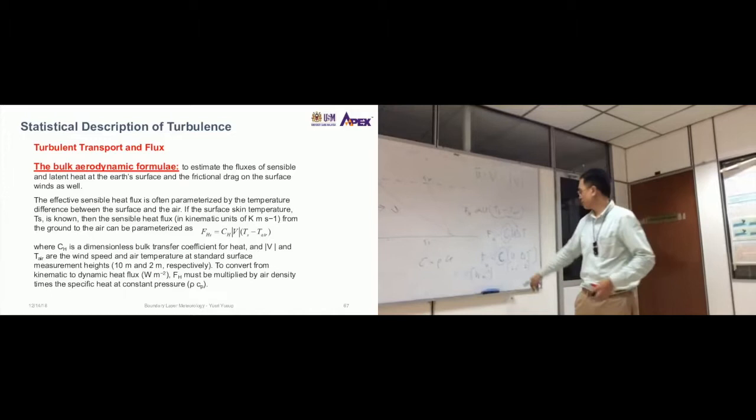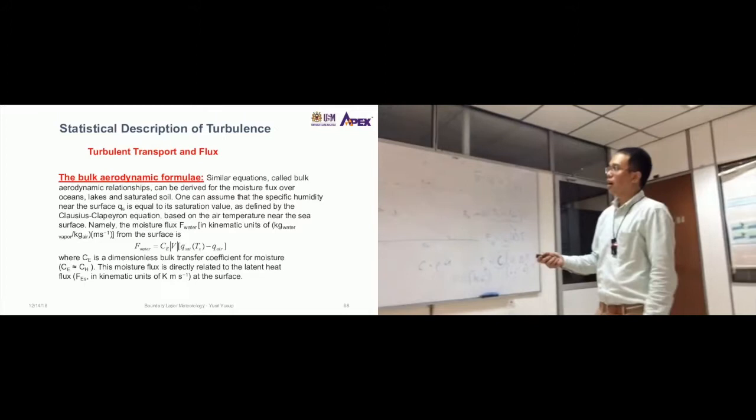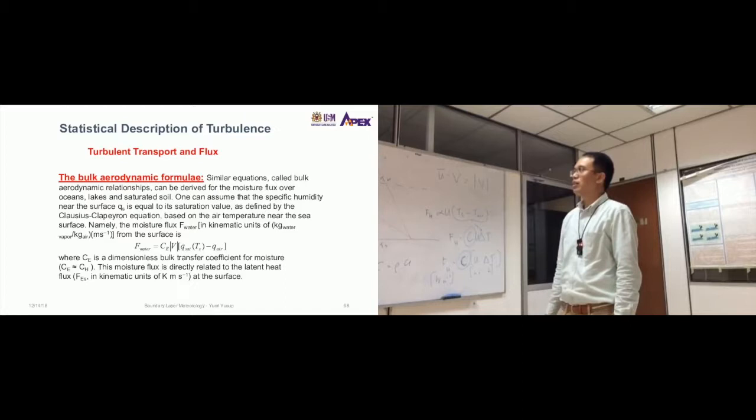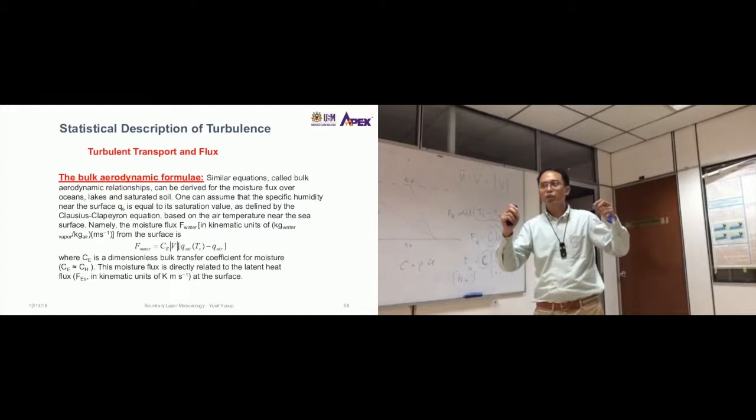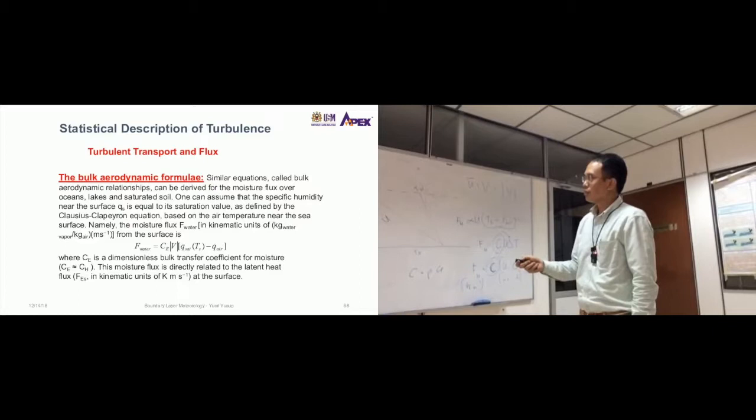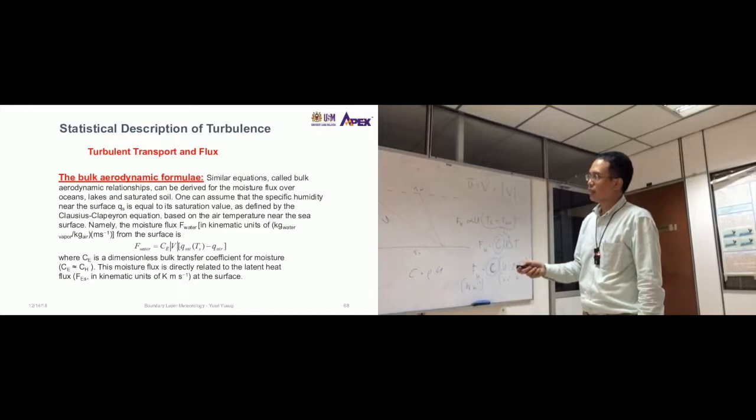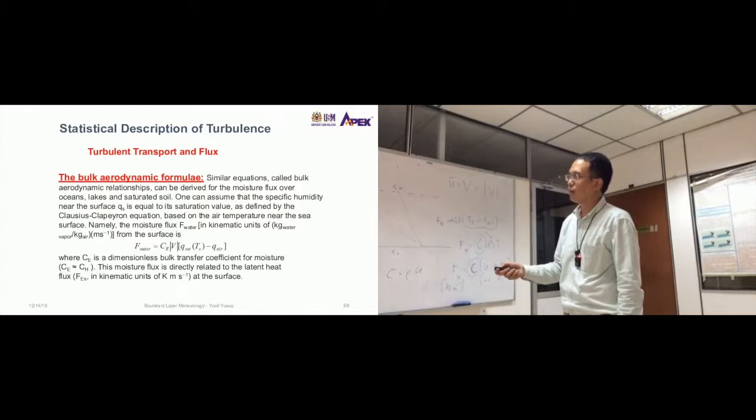Same thing, so we can go through very quickly. A similar equation called bulk aerodynamic relationships can be derived for the moisture flux from oceans, lakes, saturated soil. One can assume that the specific humidity near the surface Qs is equal to the saturation value. So let's say if you are measuring over the ocean like what I do, the concentration of water at the surface can be considered as saturation values. That means the maximum amount of moisture there is in the air.